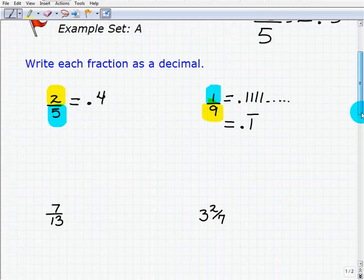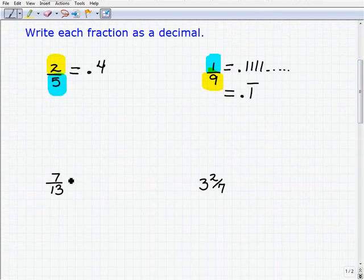Alright, moving on. Okay, so we have 7 thirteenths. So if you feel comfortable with what we're doing here, go ahead and get your calculator out and tell me what 7 thirteenths is as a decimal.